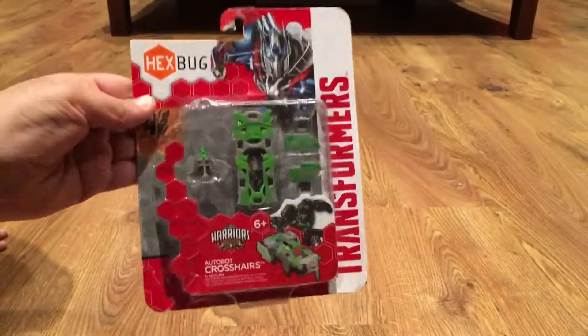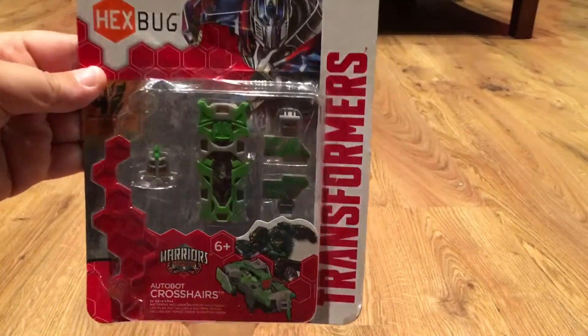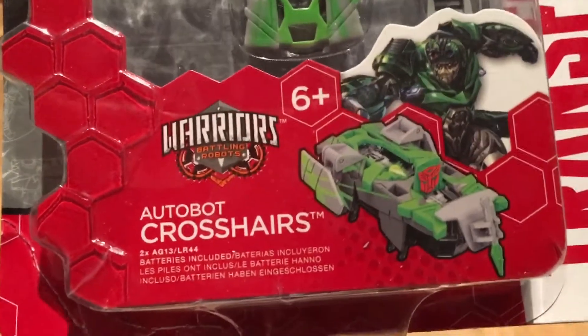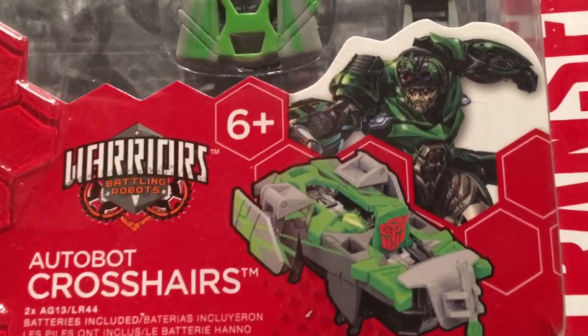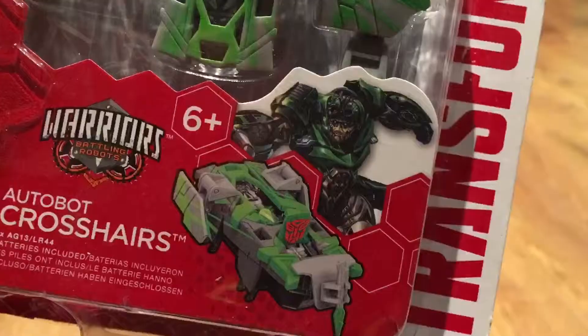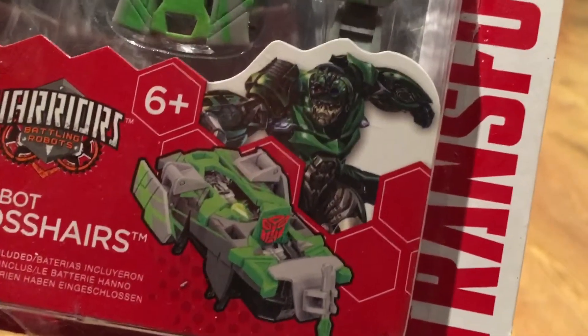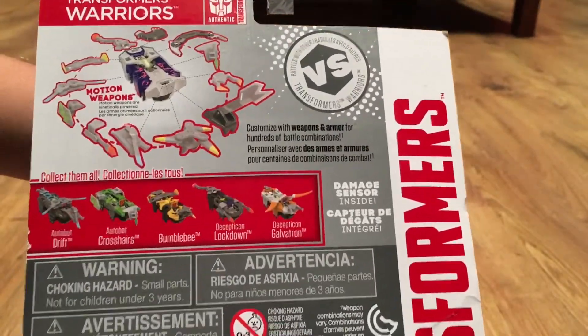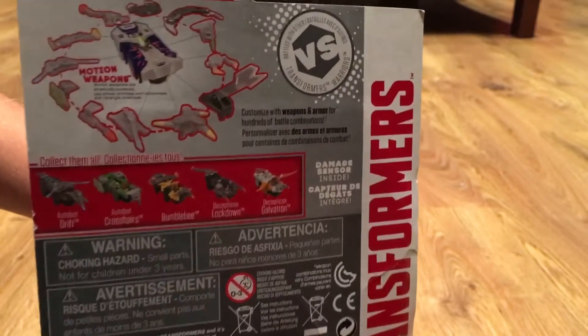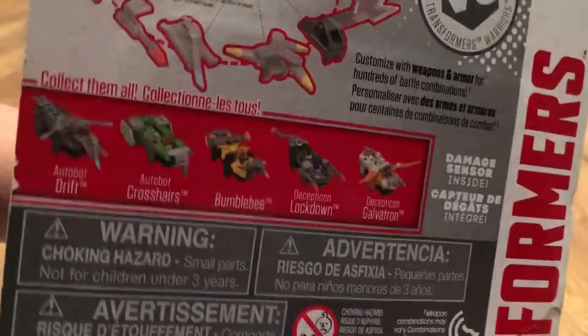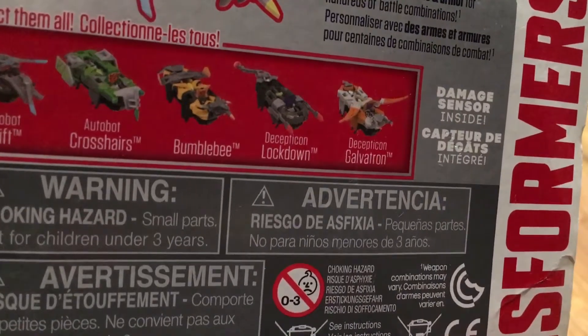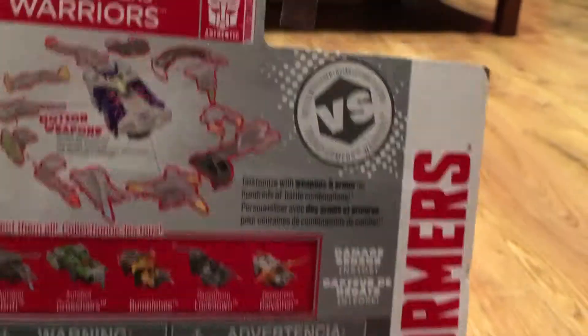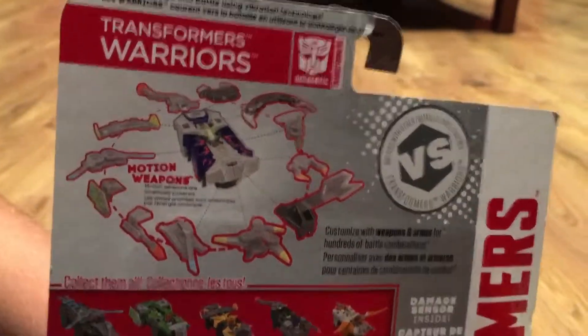Hey guys, today we're checking out this Hexbug Transformers. These are Warriors and battling robots for ages six and up. Got the green one. You can give them weapons, you can customize them. We got Autobots Crosshairs. There are hundreds of combinations. You can also add armor. Let's get to it.